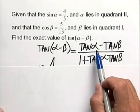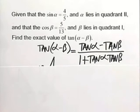Here's our formula for the tangent of alpha minus beta. That's equal to tangent of alpha minus the tangent of beta, all over one plus the tangent of alpha times the tangent of beta.